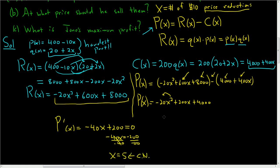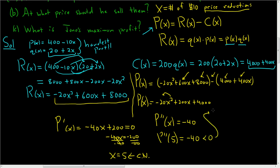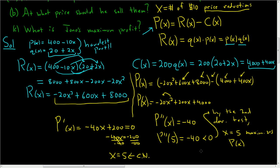To make sure X = 5 is a maximum, we use the second derivative test. The second derivative is −40. Plugging in the critical number 5, we just get −40, which is less than 0. So by the second derivative test, X = 5 maximizes the profit function. What is 5? It's the number of price reductions. So with 5 price reductions, Jono will make the maximum amount of profit.